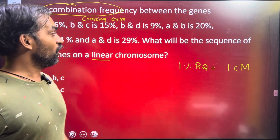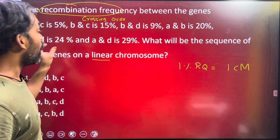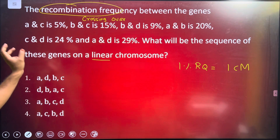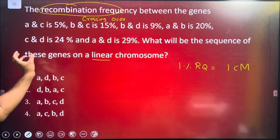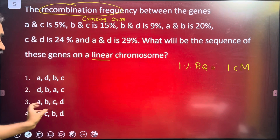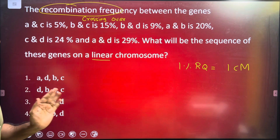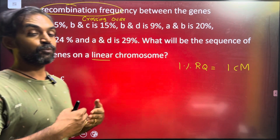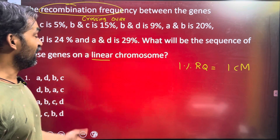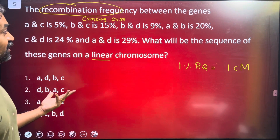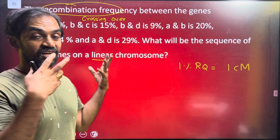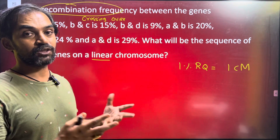Now, in the order of sequence of these genes, what sequence is it going to be? Looking at the same questions, we have genes A, B, C, D — and students, we look at the percentage of each gene pair.